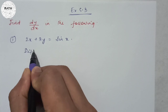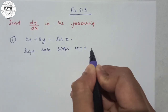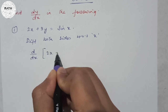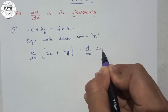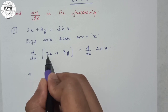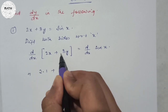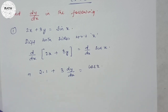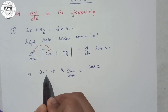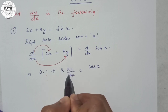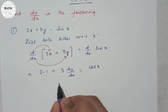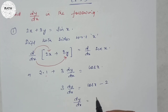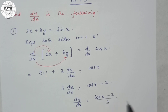Just like exercise 5.2, I have to differentiate both sides with respect to x to find implicit differentiation, that is dy/dx. So d/dx of (2x + 3y) = d/dx of sin x. Since 2 is constant, d/dx of x is 1, and 3 is constant, we get 2 + 3 dy/dx = cos x. Therefore 3 dy/dx = cos x minus 2, so dy/dx = (cos x − 2) / 3.